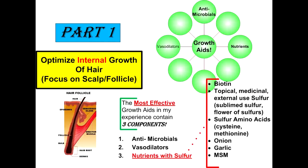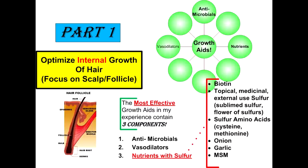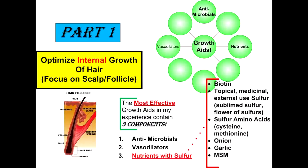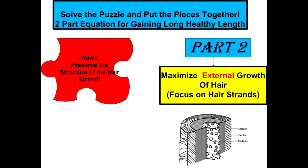The third group is what I call nutrients or vitamins, and that tends to be things with sulfur. Not all proteins are sulfur-based, but the key components here are sulfur-containing ones: MSM, garlic, onion, sublimed sulfur, and amino acids that have sulfur, like cystine and methionine. Biotin and vitamin B complex are also nutrients that have sulfur in them.